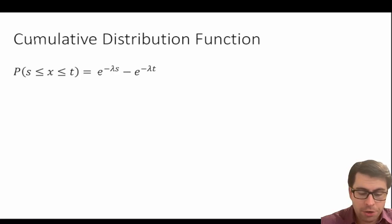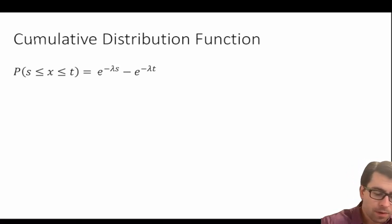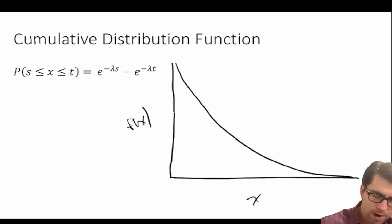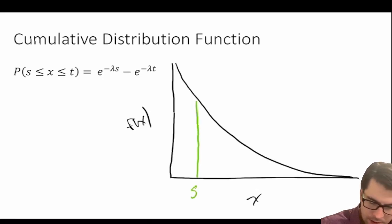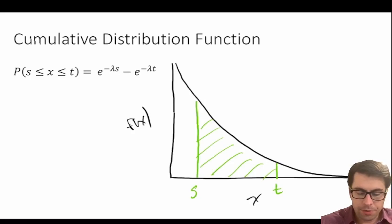We can also talk about the cumulative distribution function. The probability that s is less than or equal to x less than or equal to t is equal to e to the power of negative lambda times s, minus e to the power of negative lambda times t. So if we draw our exponential distribution with x on the horizontal axis and f(x) on the vertical axis, for some values s and t, we are looking for the probability that x falls somewhere between s and t, and we use this formula.